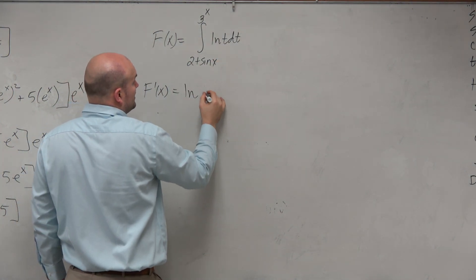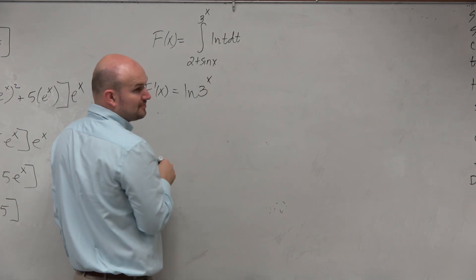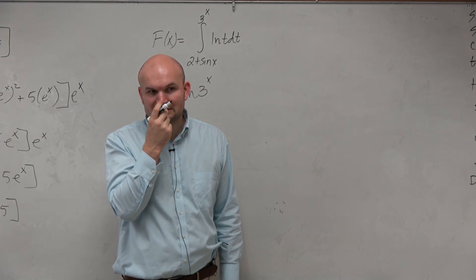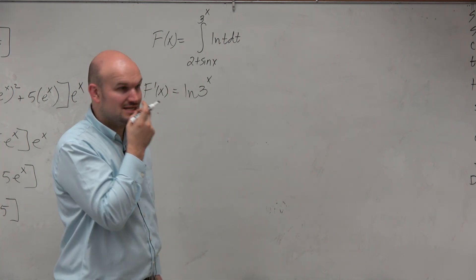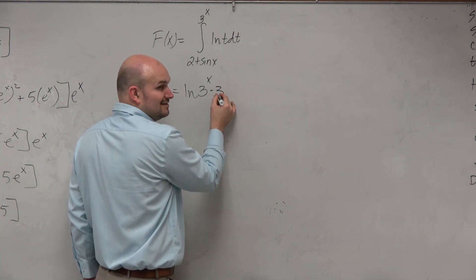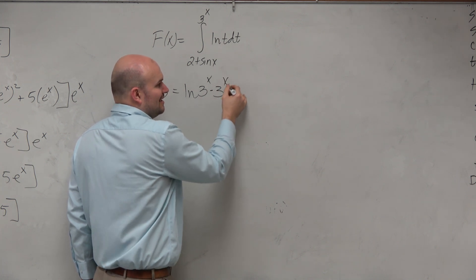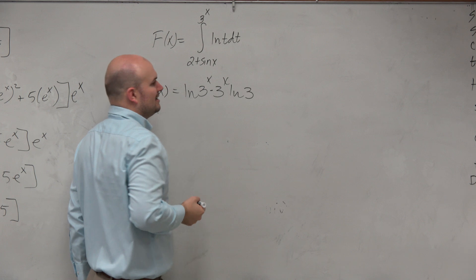So I have ln of 3 to the x times the derivative of 3 to the x. Remember the derivative of 3 to the x? 3 to the x times ln of 3, right? Remember that, ln of 3.